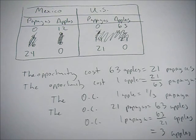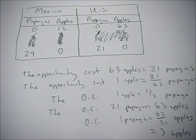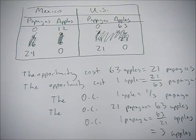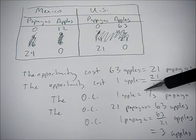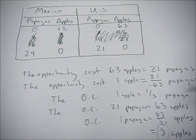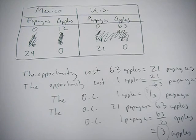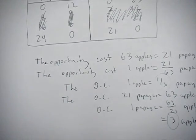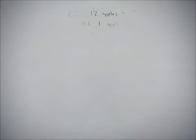So we get OC of one papaya equals 63 over 21 apples, or three apples. So the opportunity cost of one papaya in the US is three apples. You can also notice here that the opportunity cost of the related goods are just the inverses of each other. That's a very handy trick to keep in mind to make sure you did the problems correctly.